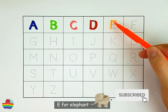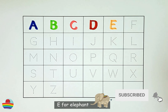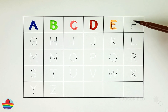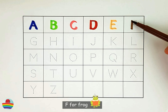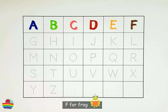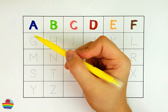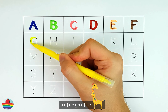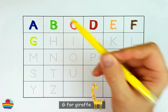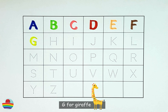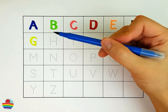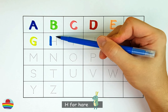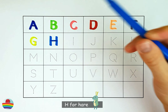E. E for Elephant. F. F for Frog. G. G for Giraffe. H. H for Hare.